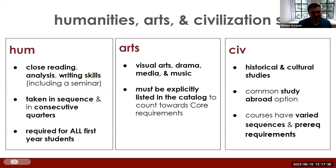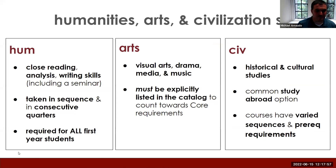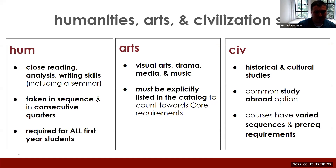Thanks, Anastasia. I'm Mike Bernardo, also one of the academic advisors here in the college. Let's dive into exactly what the core is comprised of. First, humanities — or as everyone calls it, HUME. HUME courses are comprised of close reading, analysis, and writing skills. As part of your HUME course registration, you're also required to enroll in a zero-credit writing seminar that meets about once a week, where you'll work on writing prompts and assignments from your lecture. These HUME courses are taken in sequence and in consecutive quarters. They're required for all first-year students — and as Robin mentioned, next week you'll be pre-registering and picking your HUME sequences. Even though all HUME sequences have three courses, you have the option to take either the first two or all three quarters.